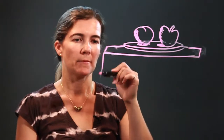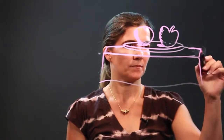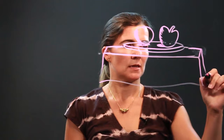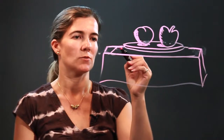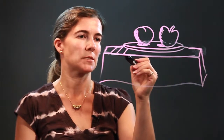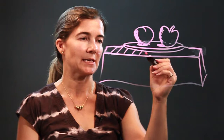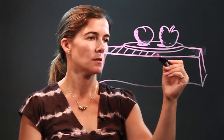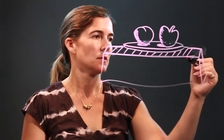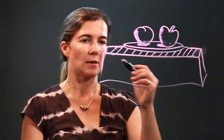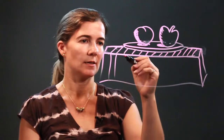And I'm going to put a tablecloth on my table. My tablecloth is going to be striped. Notice how the direction of my stripes is slanted to give the table some depth, and then it's hanging down here.